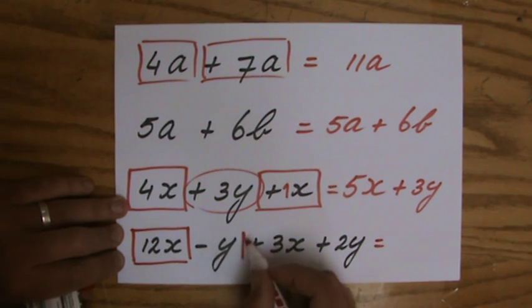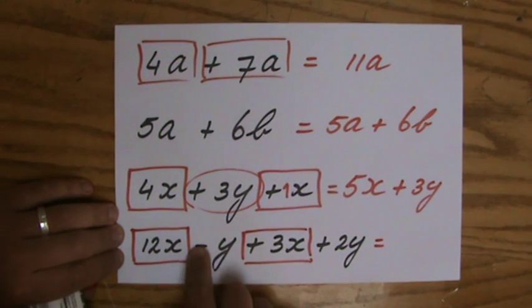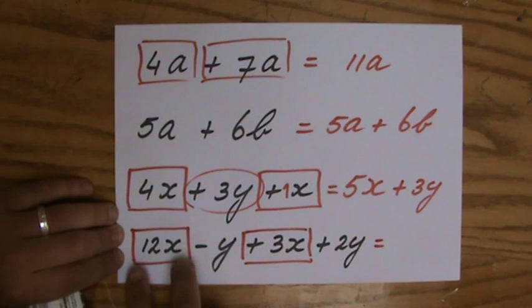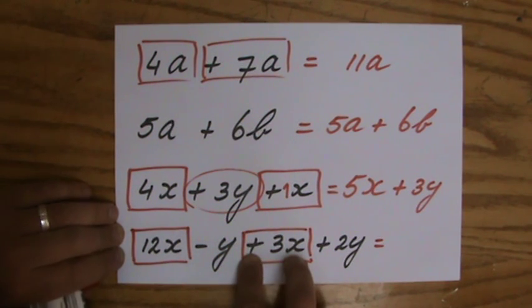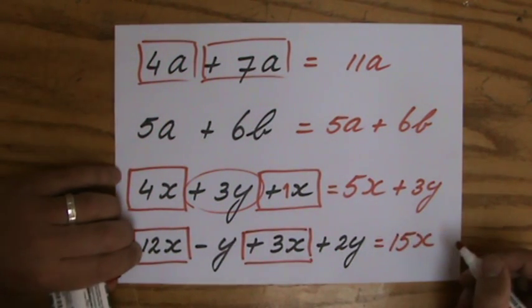12X plus 3X because the sign belongs to this term. So it's not 12X minus 3X. No, you have the term 12X. You have the term positive 3X. And 12X plus 3X is 15X.